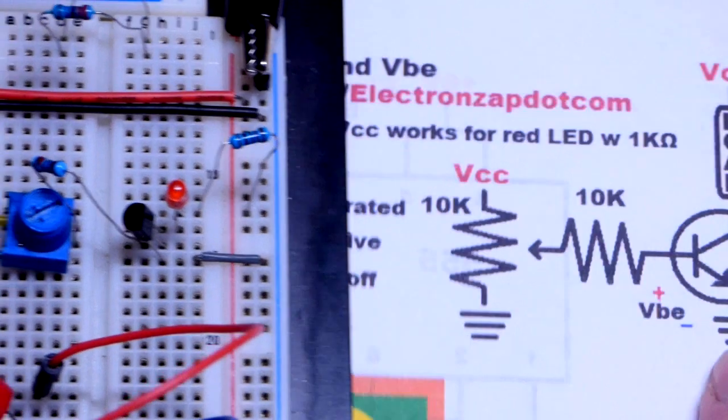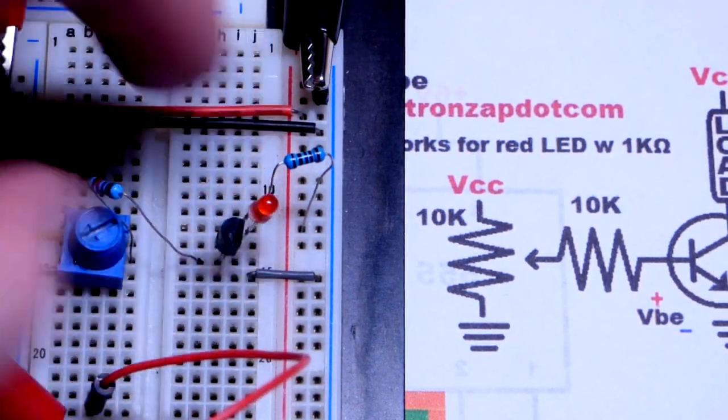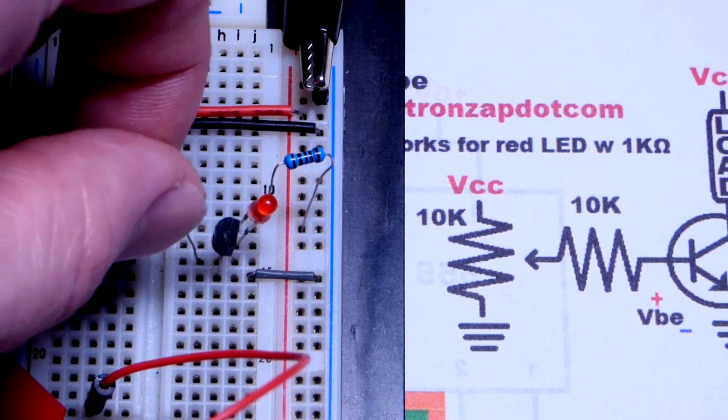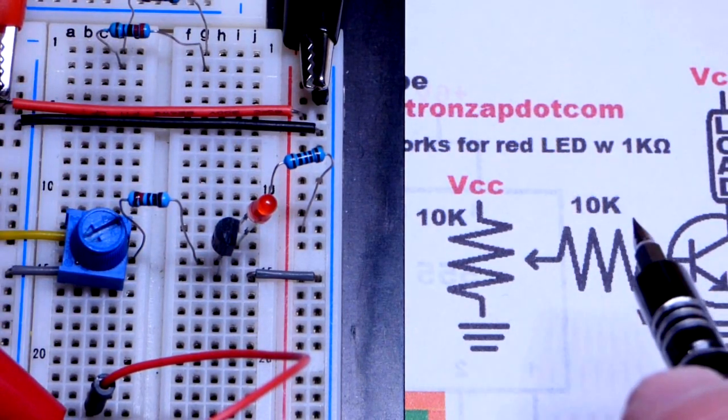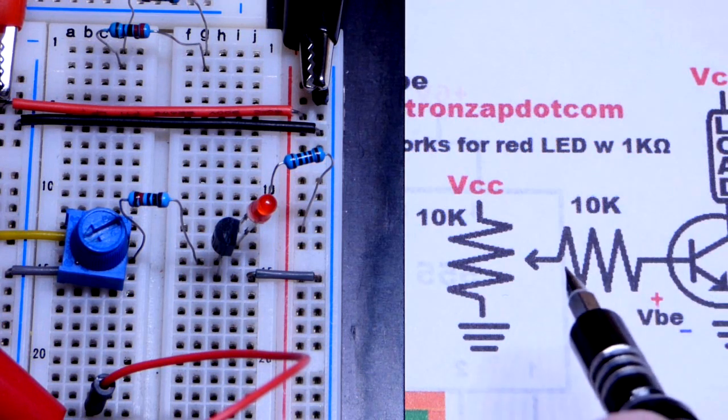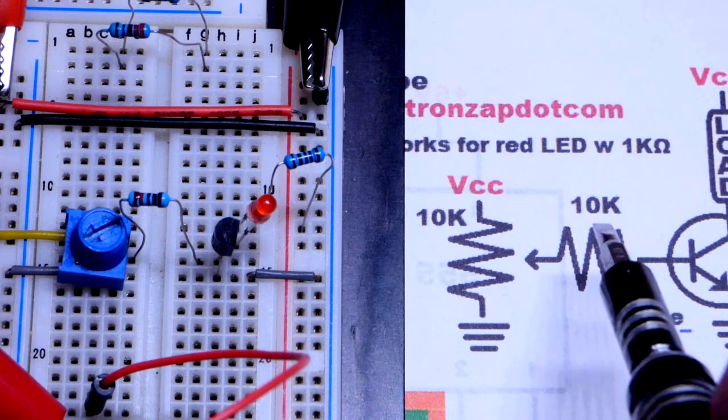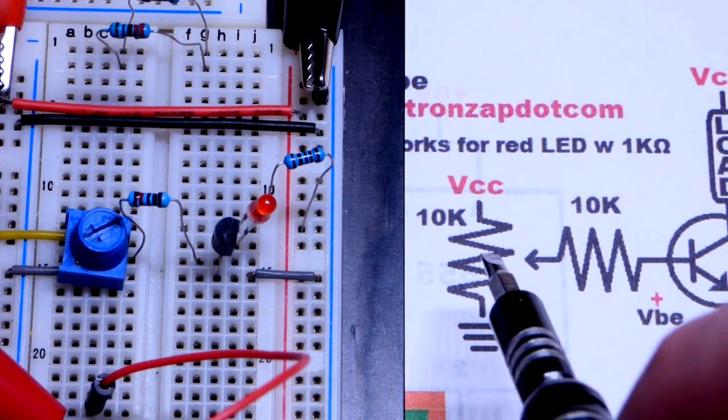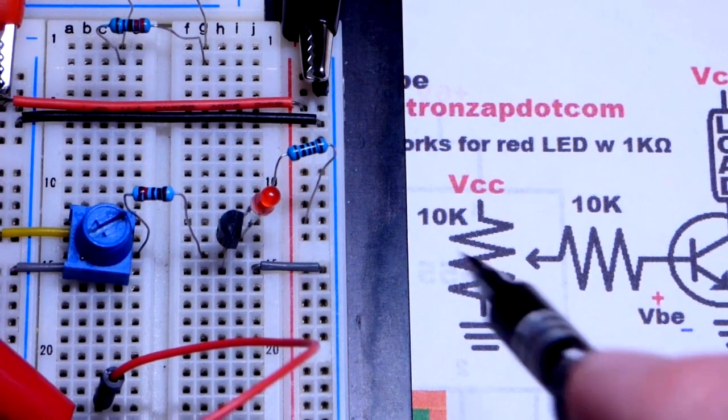So that base, right there, the middle pin of the transistor, comes to this resistor, which goes to the middle of this trim pot here. So this is a 10 kiloohm trim pot. Seems to work pretty good with the base of bipolar junction transistors. So I generally, almost always use 10 kiloohms right there.